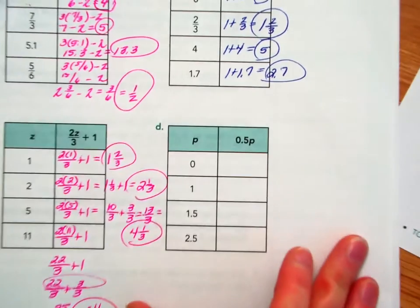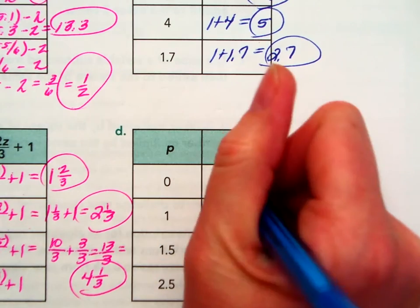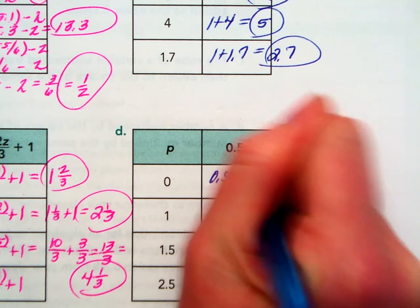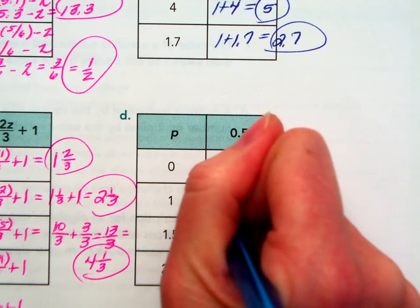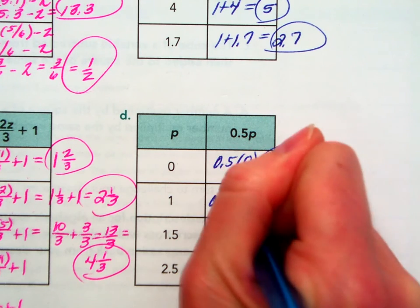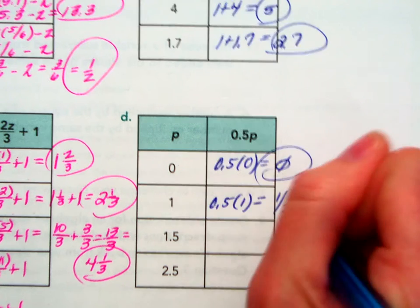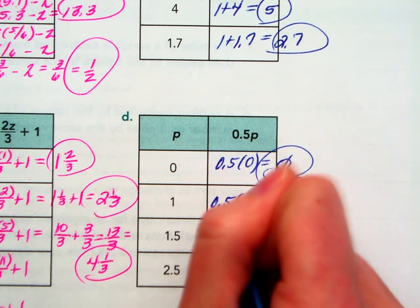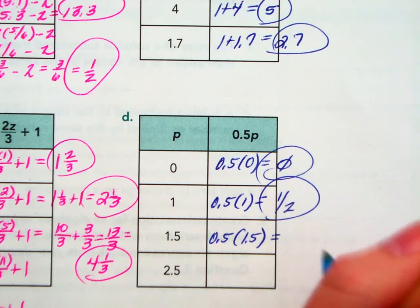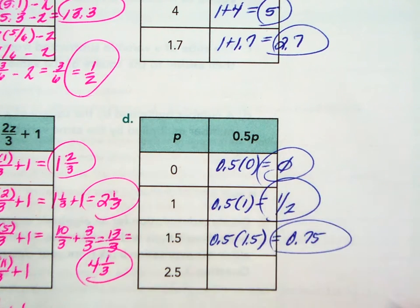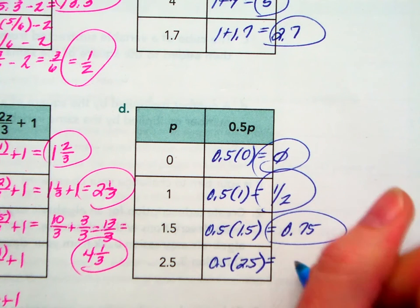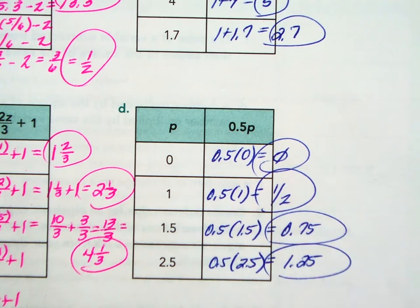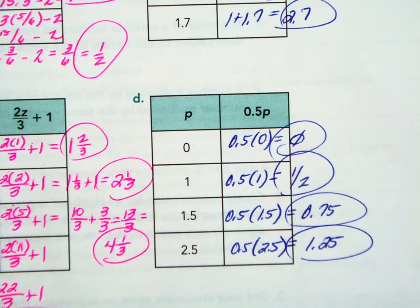Last, 1 half P. So, 0.5 times 0. Guess what that's worth? A whole lot of nothing. That's what it's worth. All right. 1 half of 1 is a half. That's all you got. 1 half of 1 and a half. I think that's 0.75. And then 1 half of 2 and a half. That is 1 in 25 hundredths. Again, if you got stuck on the multiplication here, pull out your calculator. Test these again using a calculator.